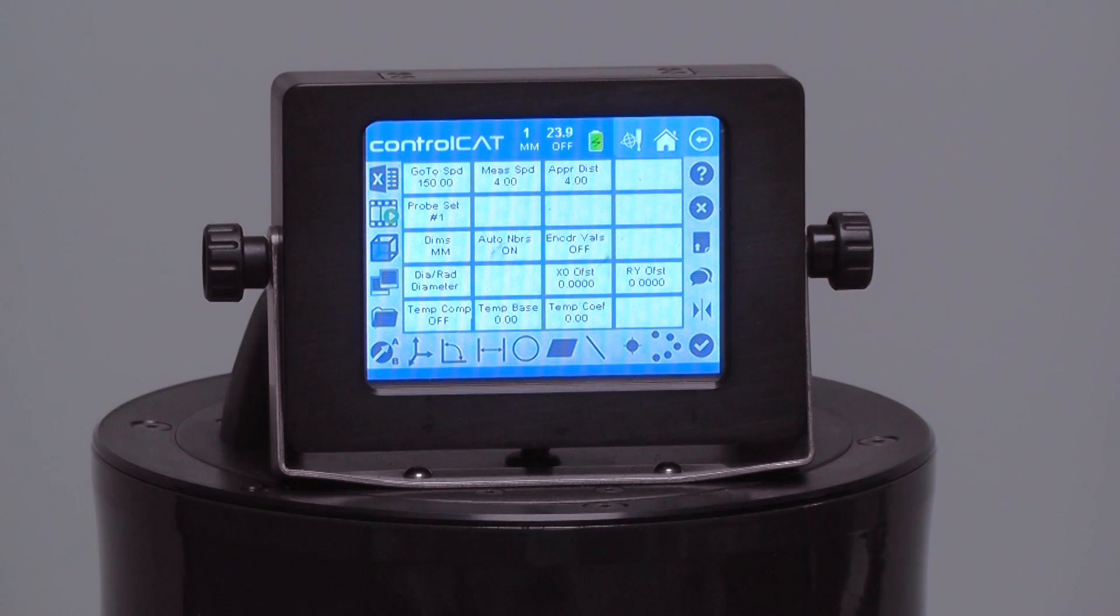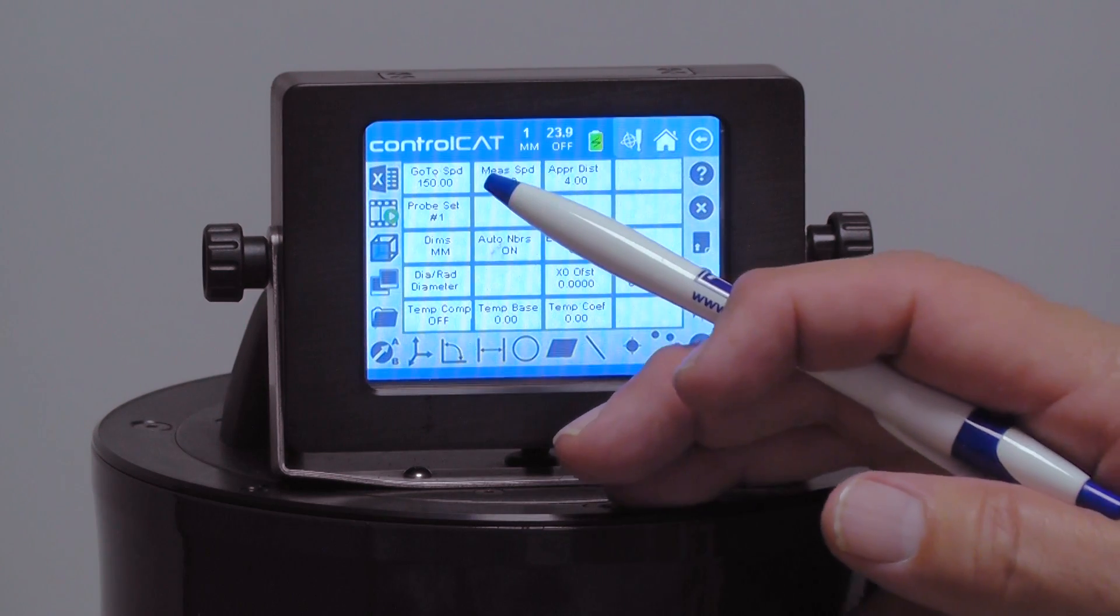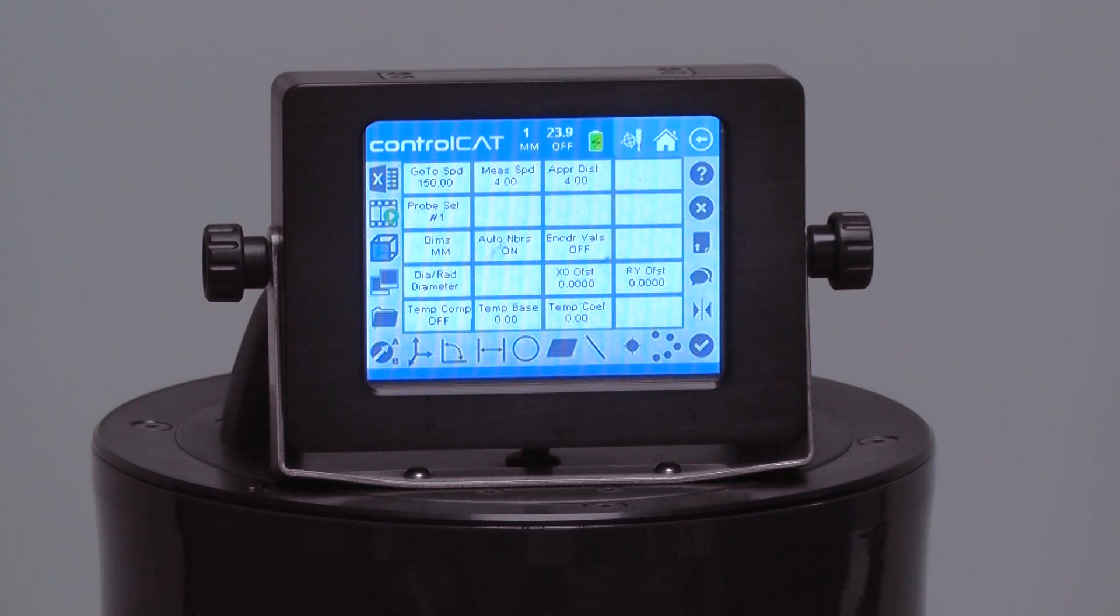This allows us to edit the go-to speed, and that would be the speed that the probe moves between dimensions. In this case it's set to its maximum, which is 150 millimeters per second. I like that for demonstration purposes, but you may want to be 100 millimeters per second.